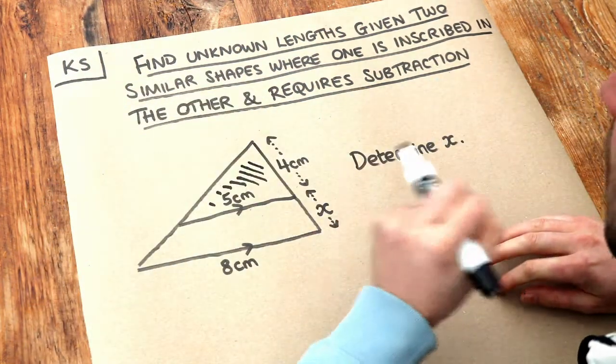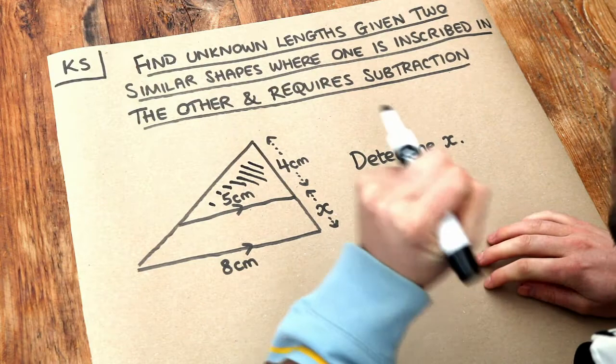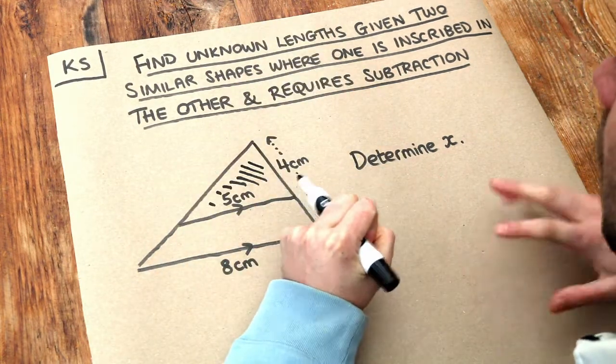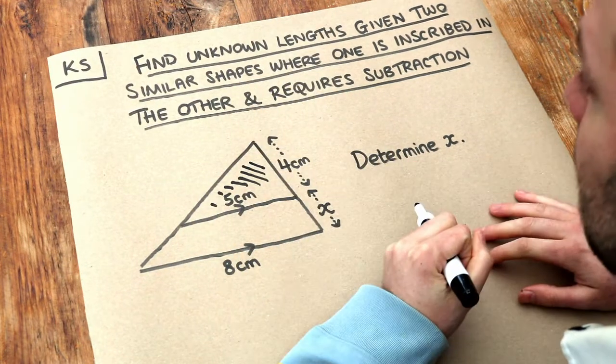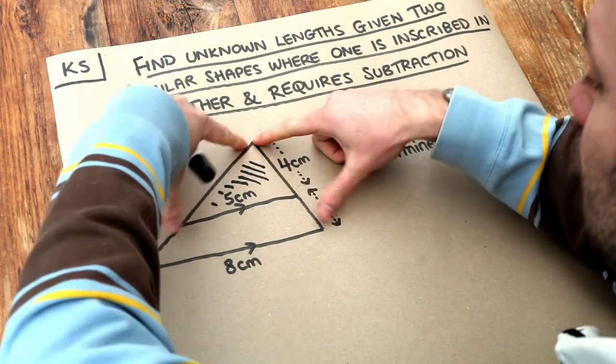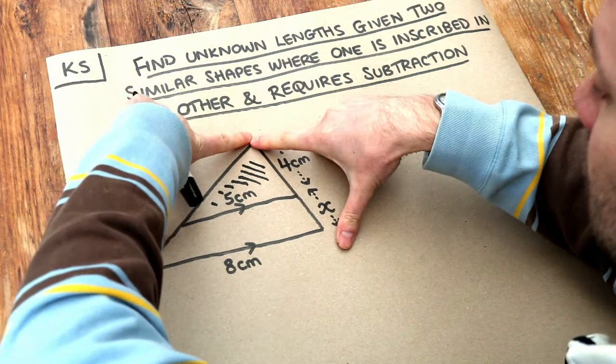Remember, two triangles are similar if they have the same shape — so the same angles — but not necessarily the same size. So this triangle is similar to this one.